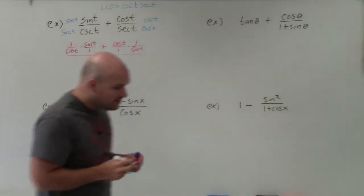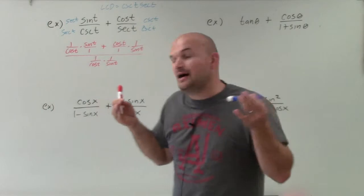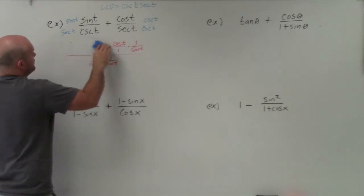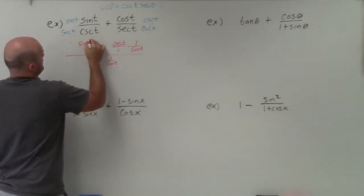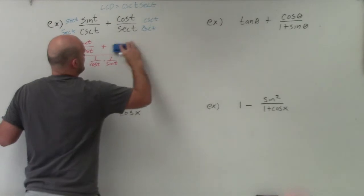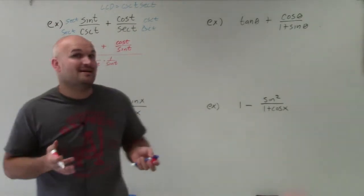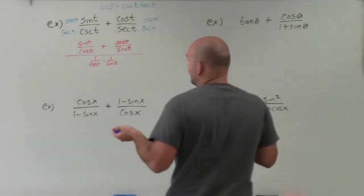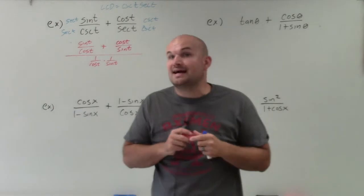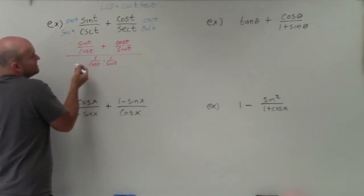What we notice is that we now have sine over cosine plus cosine over sine. Unfortunately, we still cannot combine those directly. Simplifying, this gives us sine of t over cosine of t plus cosine of t over sine of t. You might say this looks more complicated — and at this point, yes, it does — but we still need to add these up, so we'll use common denominators again. The common denominator between cosine of t and sine of t is cosine of t times sine of t.